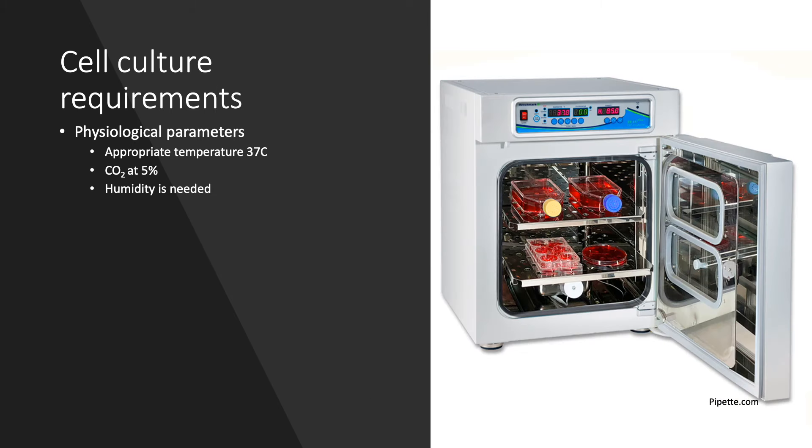In order to optimally culture and preserve the integrity of cells, several physiological conditions must be met, such as appropriate temperature and gas mixture. These two are normally set as 37 degrees Celsius and 5% CO2. Mammalian cells also require a humidified environment. All of these parameters can be met and controlled using a cell incubator.